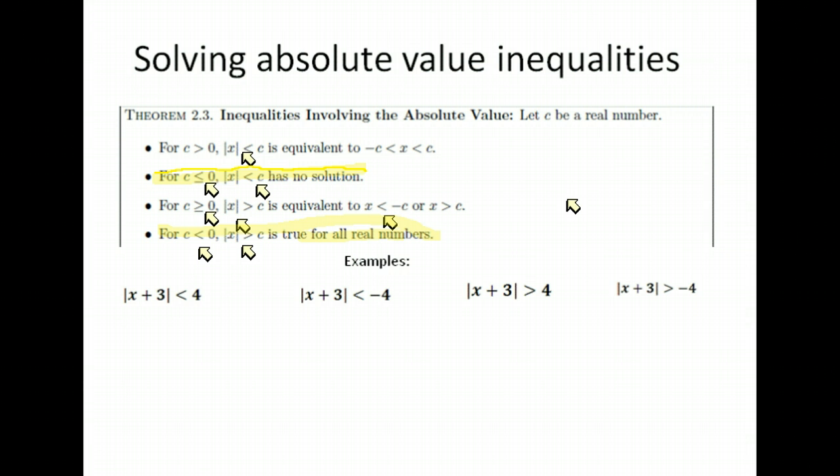If an absolute value is less than a negative number, it's no solution. If an absolute value is set greater than a negative number, it's going to be all real numbers. So let's look at some examples down here, and let's set these problems up. This first one says the absolute value of x plus 3 is less than 4. If we look at our case, it's less than a positive number. That's a possibility. So then we go ahead and we solve that.